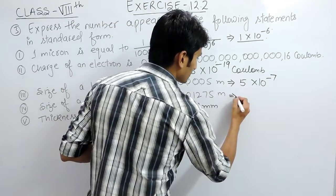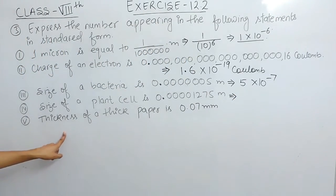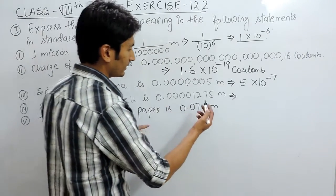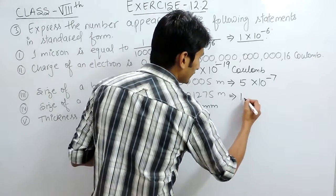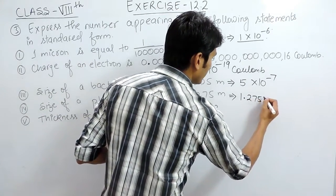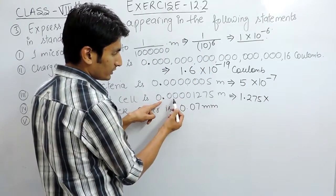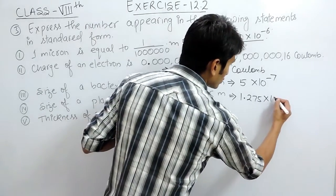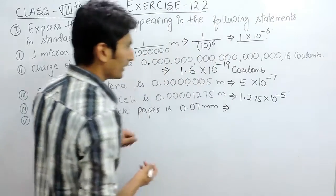In the next part, the size of a plant cell is given as this many meters. To convert it into standard form, write it as 1.275 multiplied by 10 raised to power — the decimal is shifted after 5 digits — so 10 raised to power minus 5.